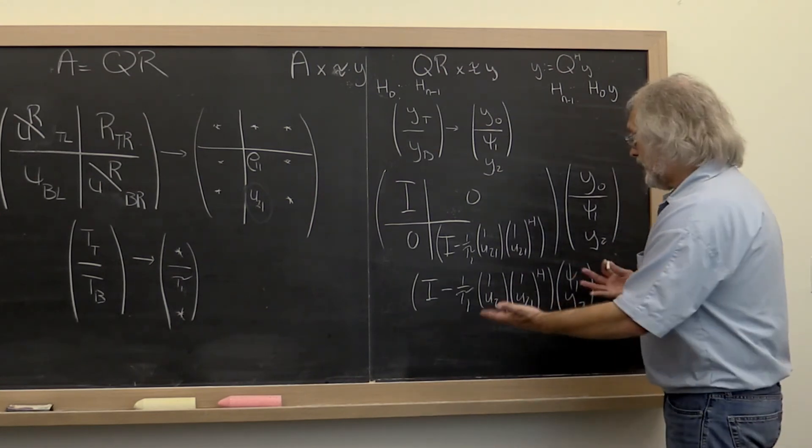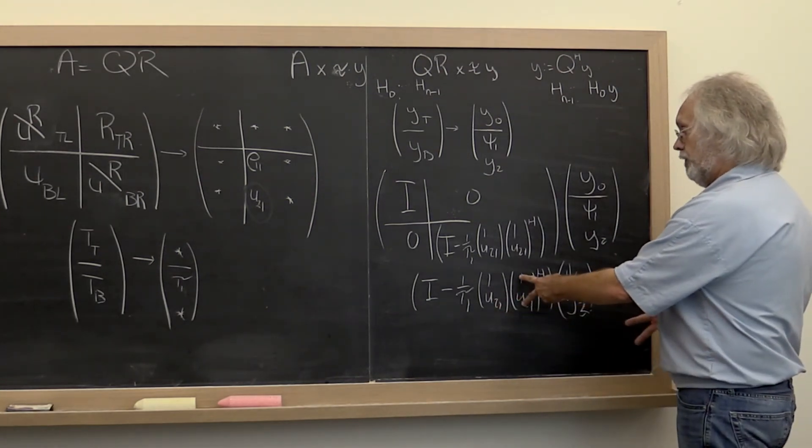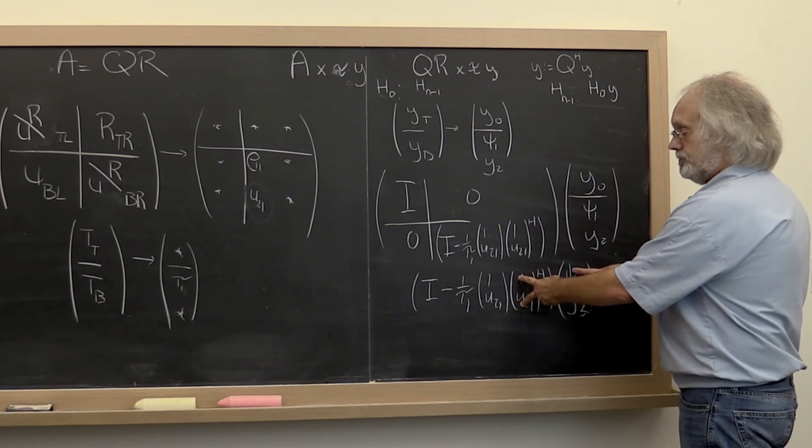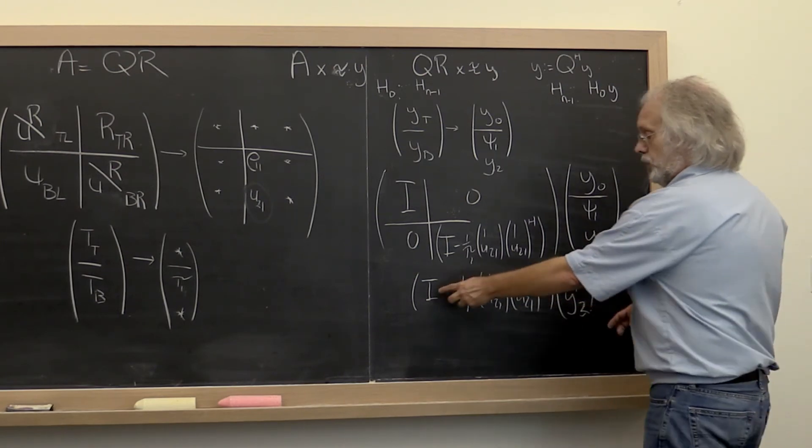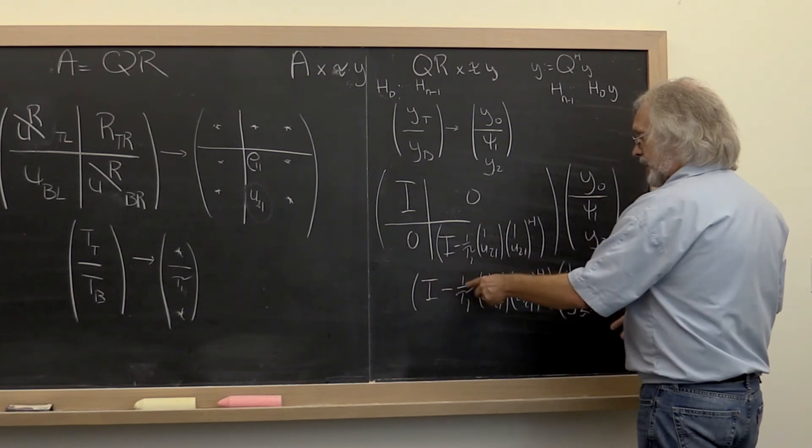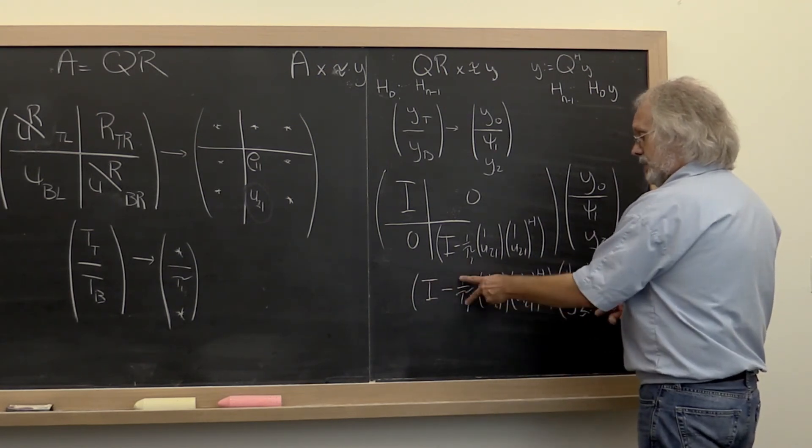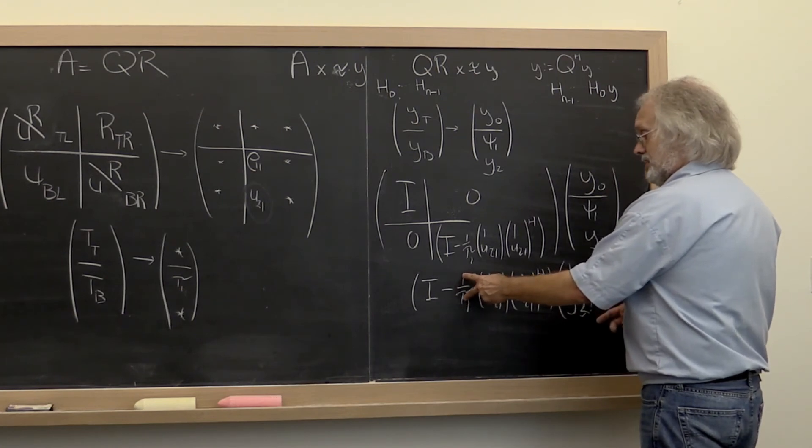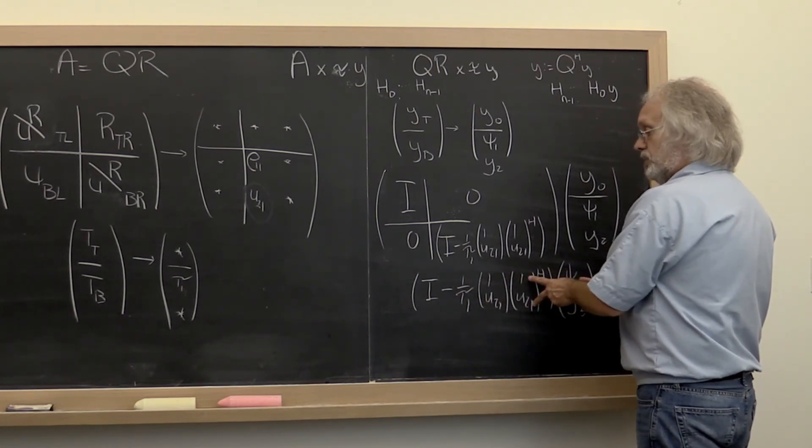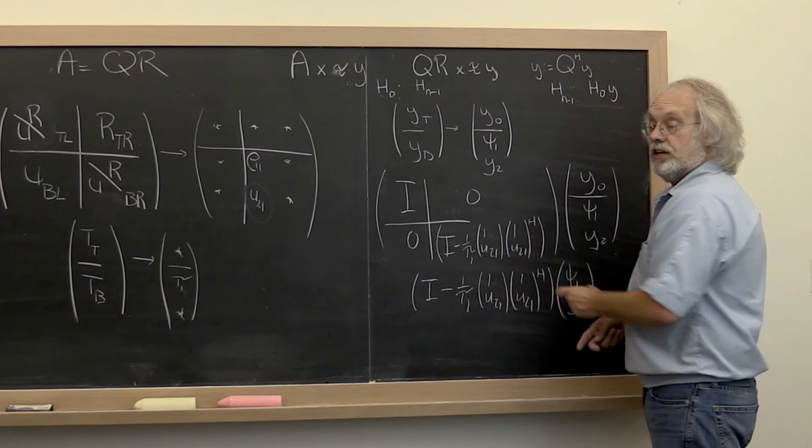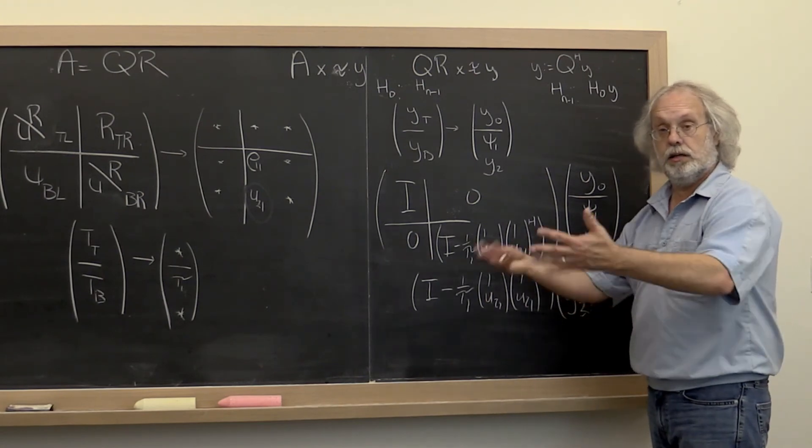But what you recognize is that you could first do this dot product. After which all you need to do is subtract from this vector a scalar which is this scalar times the dot product that you just computed times this vector right here. And then you move on.